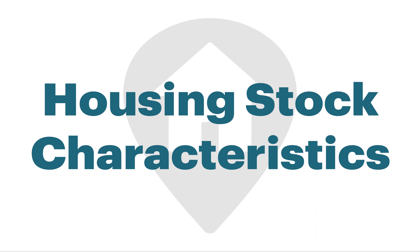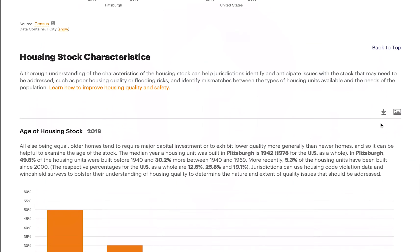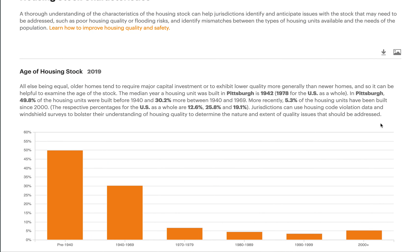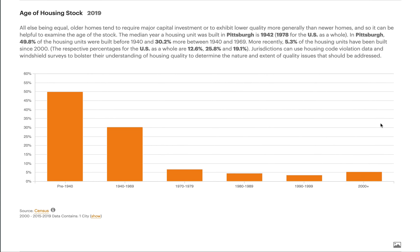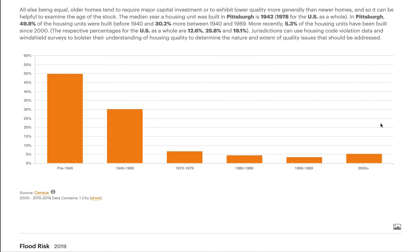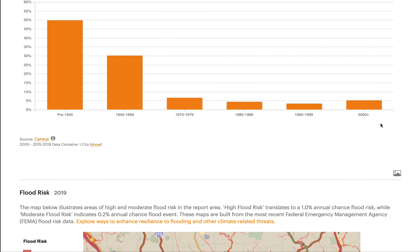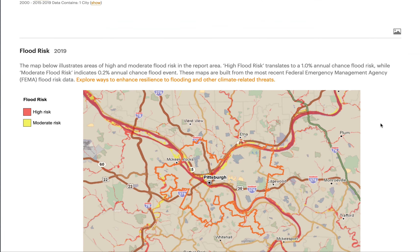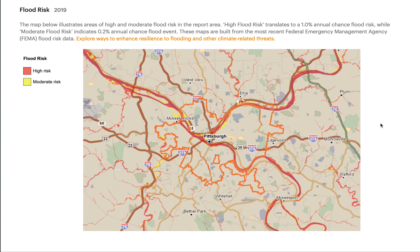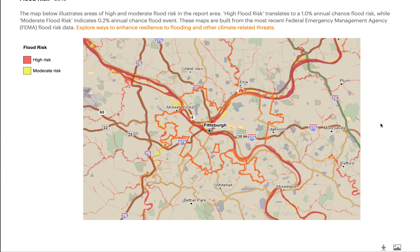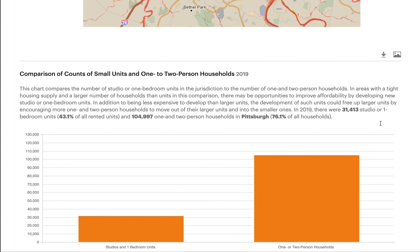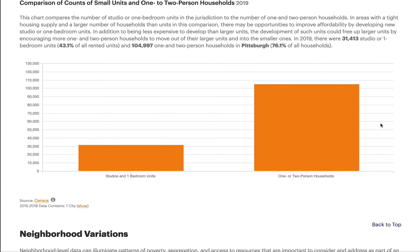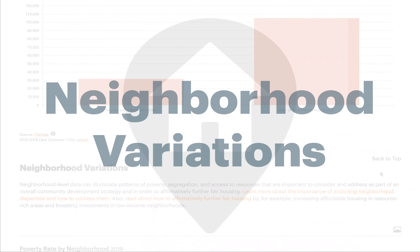The sixth section on housing stock characteristics gives users a thorough understanding of the makeup of the housing stock, which can help jurisdictions identify and anticipate issues such as poor housing quality or flooding risks, and identify mismatches between the types of housing units available and the needs of the population.